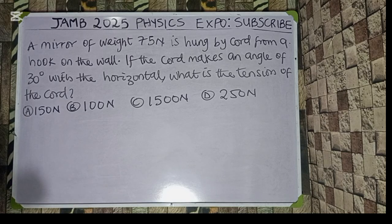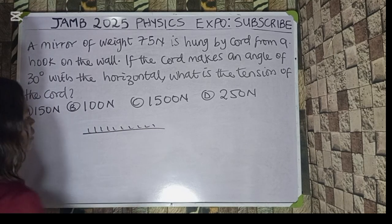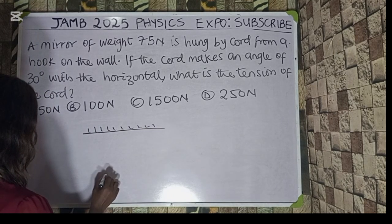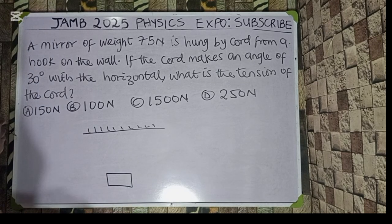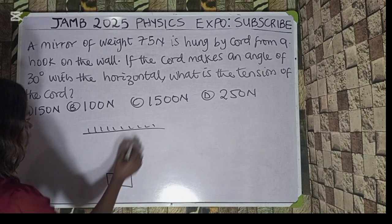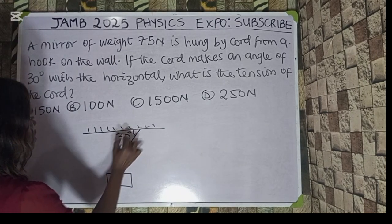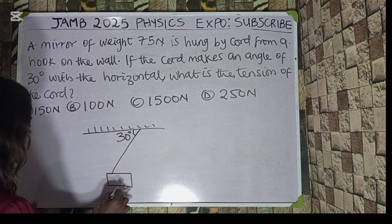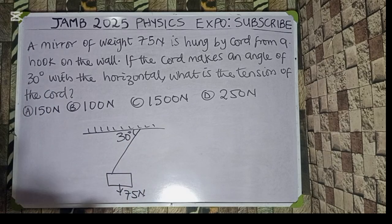We are going to explain this question with a diagram. A mirror weighing 75 newton is hung by a cord from a hook on the wall — so this is the wall, and this is the mirror. The cord makes an angle of 30 degrees with the horizontal — see the horizontal here, and the angle is 30 degrees. The weight of the mirror is acting down, which is 75 newton, and the question asks us to calculate the tension in the cord.